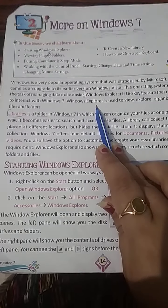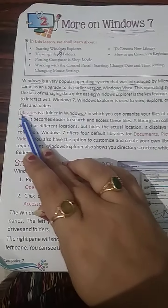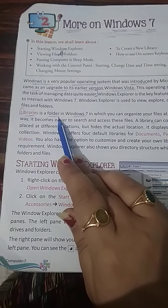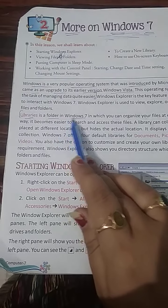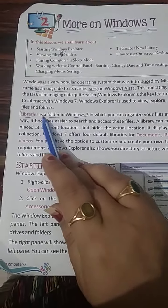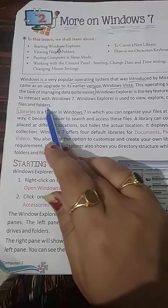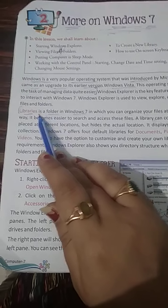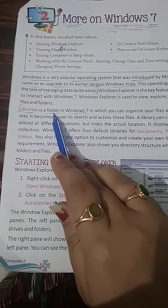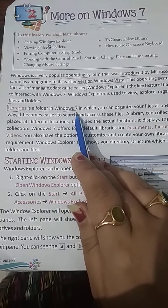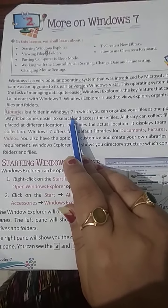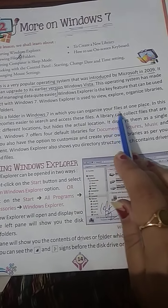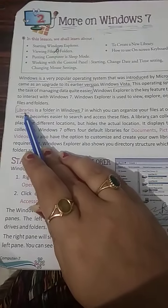Now in Windows Explorer, our topic is Libraries. Libraries of Folders in Windows 7. There is a folder in Windows 7 in which you can organize your files at one place — this is the Library of Folders in Windows 7.